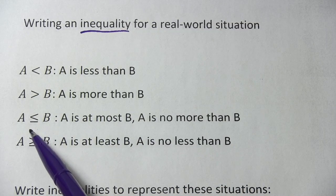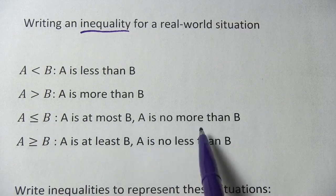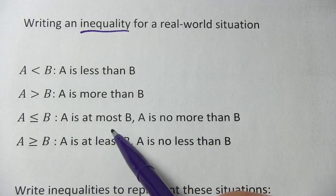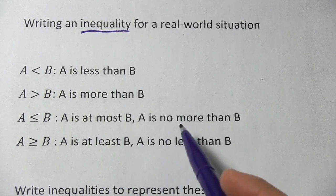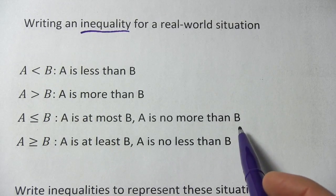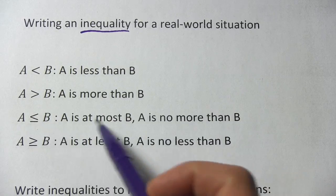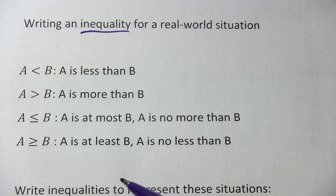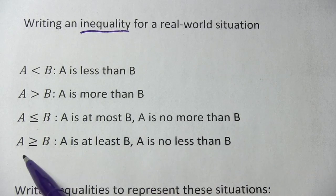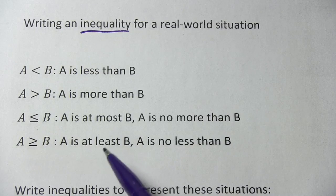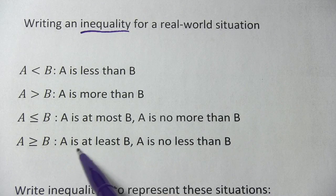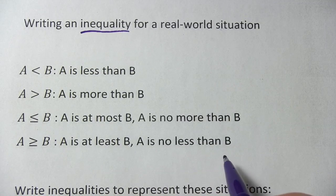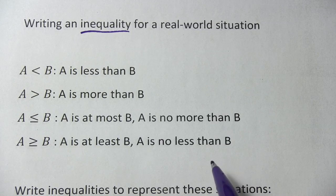A is less than or equal to B can be written in a couple of different ways. You could say something is 'at most' some value, or something is 'no more than' some value. Both of those mean the same thing — they mean less than or equal to. And likewise with greater than or equal to, you get 'something is at least some value' or 'something is no less than some value.'